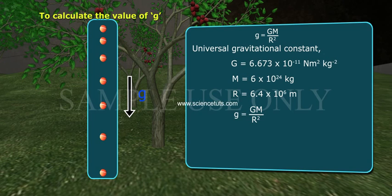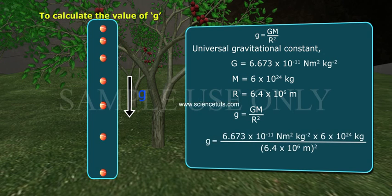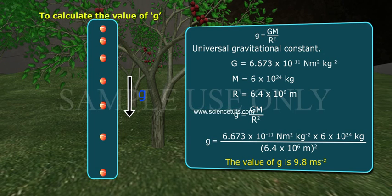g equals GM by r². g equals 6.673 × 10⁻¹¹ Nm² kg⁻² times 6 × 10²⁴ kg divided by (6.4 × 10⁶ m)². The value of g is 9.8 m/s².